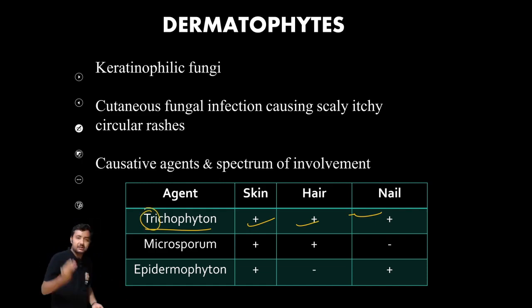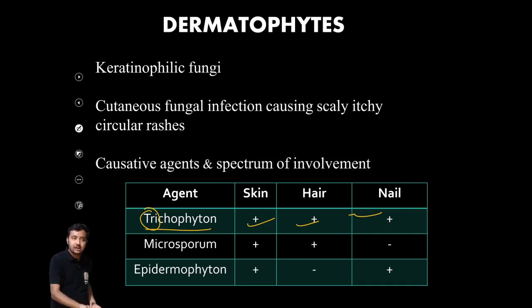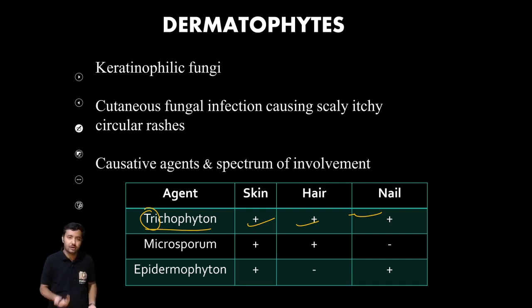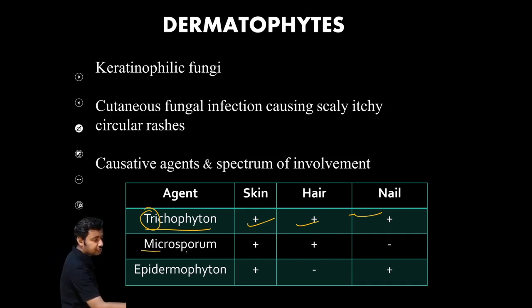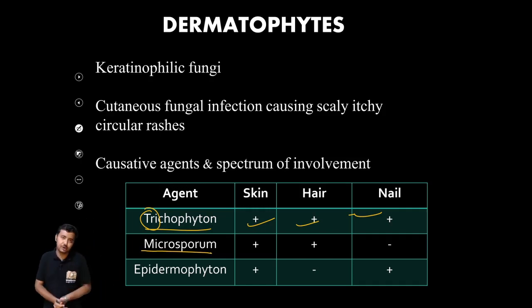Trichophyton — 'tri' meaning three — involves all three: skin, hair, and nail. Next is Microsporum, which is another important dermatophyte genus.